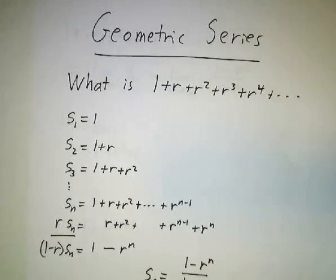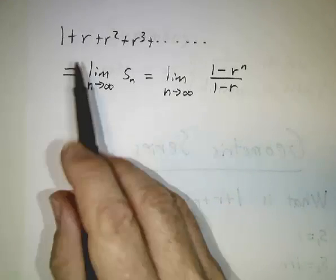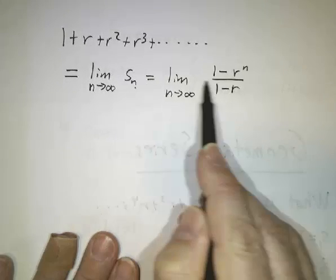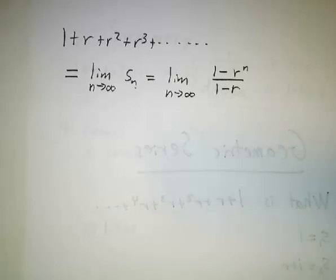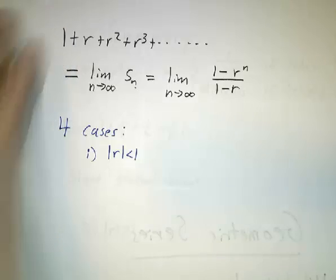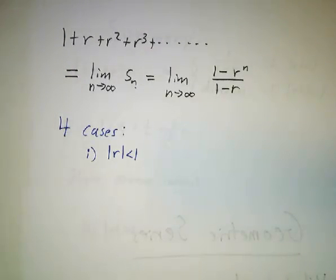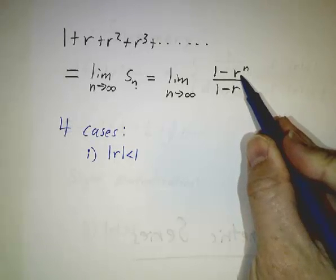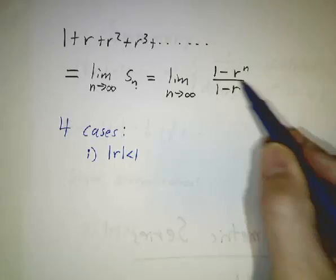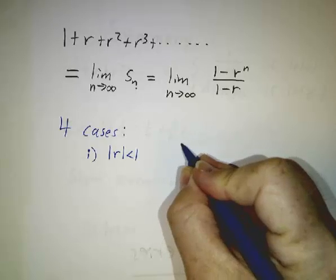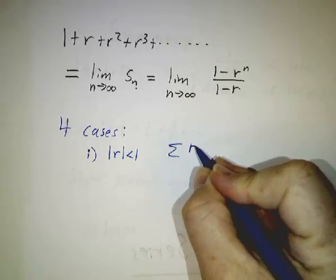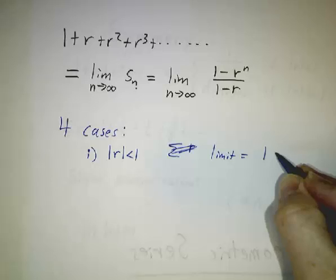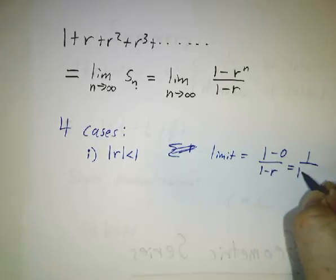Now let's see what the limit is. If we want to take the infinite sum, by definition that's the limit of the partial sums, which is the limit of 1 minus r to the n over 1 minus r. There are four cases to consider. The first case is where the ratio r is less than 1 in absolute value. In that case, as we take more and more powers of r, we get smaller and smaller numbers, and the limit is 1 minus 0 over 1 minus r, which is 1 over 1 minus r.